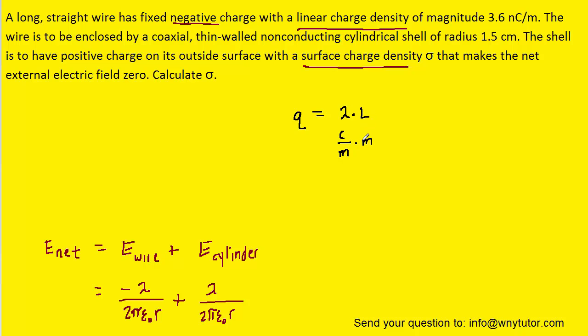Hopefully that makes sense because a linear charge density has the units of coulombs per meter and length has a unit of meters. So if we multiplied those two quantities together the meters would cancel and we would get coulombs which is the charge. So we can see that the amount of charge is related to the linear charge density by the following equation.